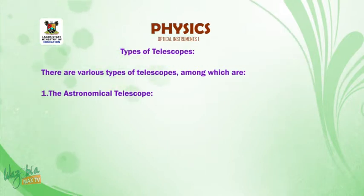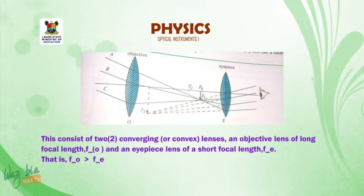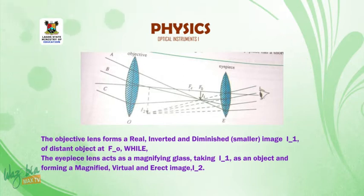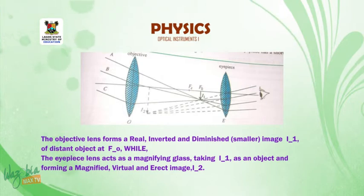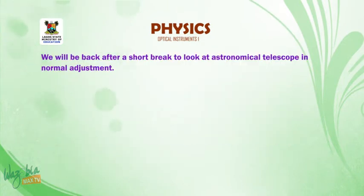There are various types of telescopes. One: the astronomical telescope. This consists of two converging lenses — an objective lens of long focal length, F0, and an eyepiece lens of short focal length, FE; that is, F0 is greater than FE. The objective lens forms a real, inverted, and diminished image I1 of a distant object at F0, while the eyepiece lens acts as a magnifying glass, taking I1 as an object and forming a magnified, virtual, and erect final image I2.